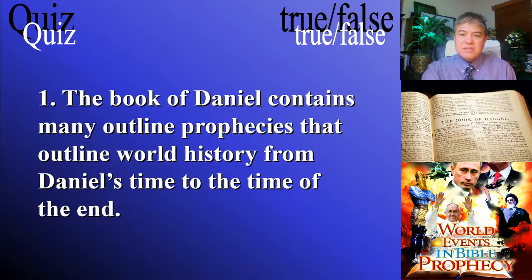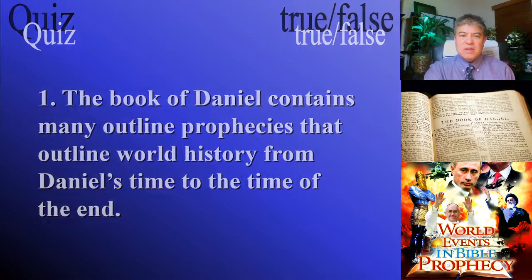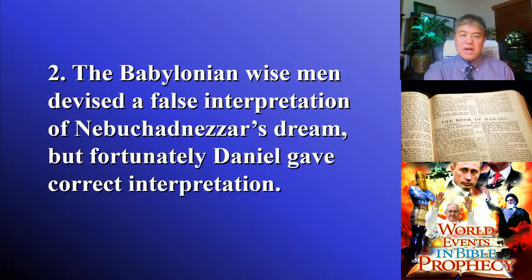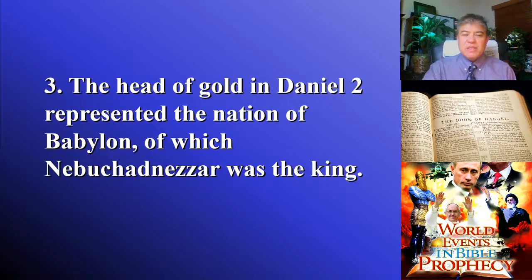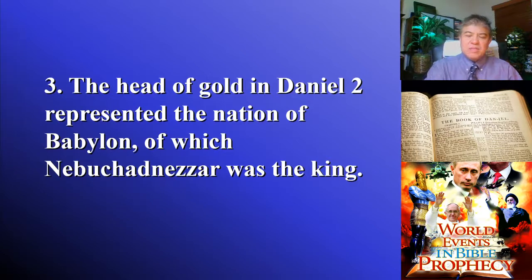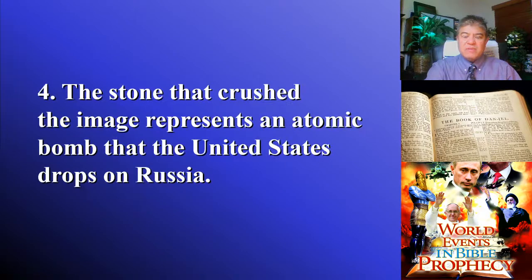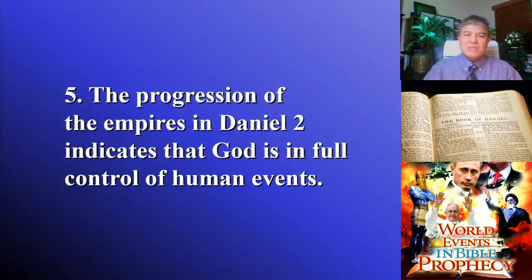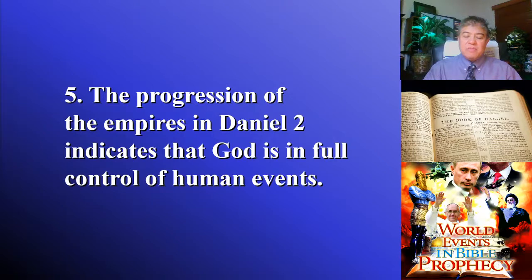Question one: The book of Daniel contains many outlined prophecies that outline world history from Daniel's time to the time of the end — true or false? Question two: The Babylonian wise men devised a false interpretation of Nebuchadnezzar's dream, but fortunately Daniel gave the correct interpretation — true or false? Question three: The head of gold in Daniel 2 represented the nation of Babylon, of which Nebuchadnezzar was the king. Question four: The stone that crushed the image represents an atomic bomb that the United States drops on Russia — true or false? Question five: The progression of the empires found in Daniel 2 indicates that God is in full control of human events — true or false?